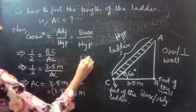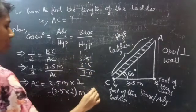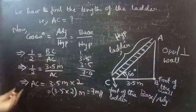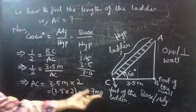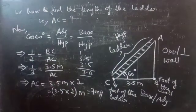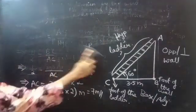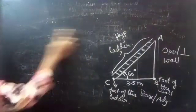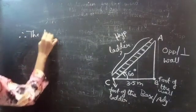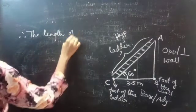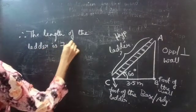This implies AC equals 3.5 meters multiplied by 2, which equals 7.0 meters. So AC equals 7 meters, which is nothing but the length of the ladder is 7 meters. Therefore, the length of the ladder is 7 meters.